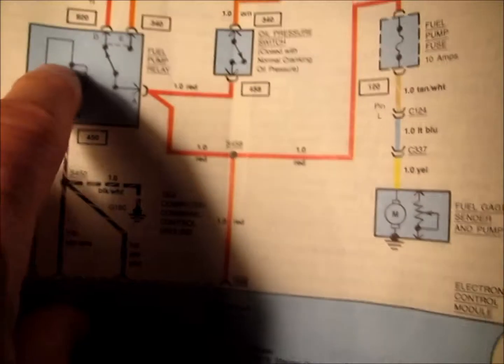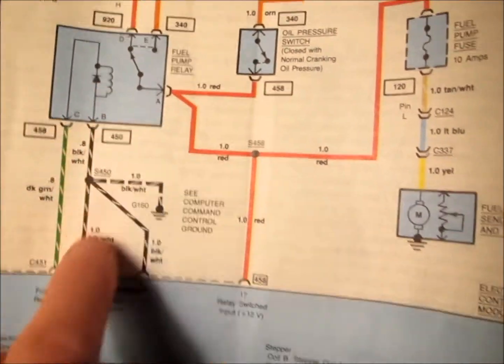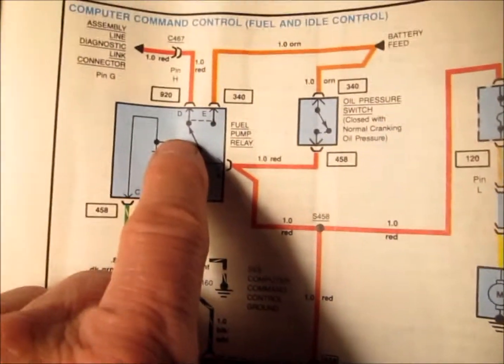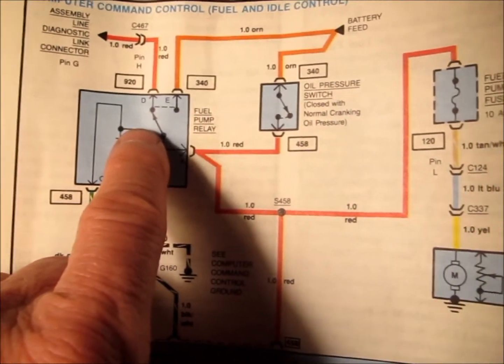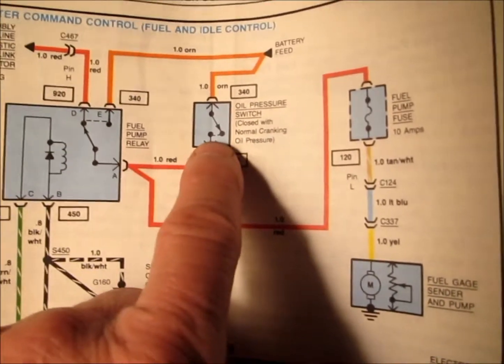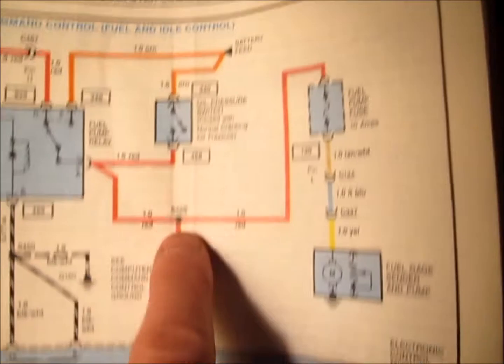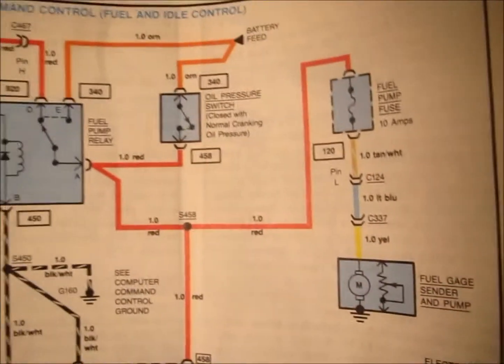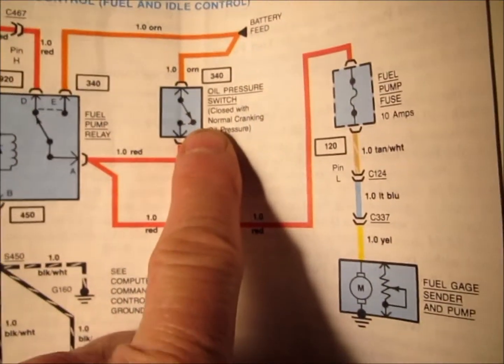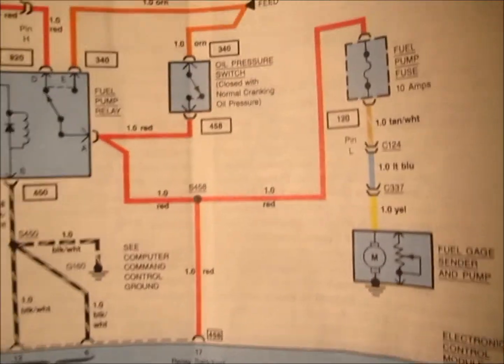What they're talking about is this will close up and the ECM will feed off the fuel pump relay for a couple of seconds until it opens up. Then the oil pressure switch sees 5 PSI, it will close, and then the ECM will be looking to the oil pressure switch for its current.